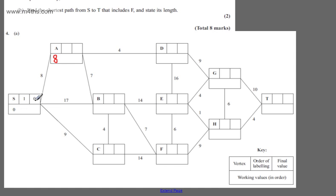We consider the connected vertex and all of the unconnected vertices that we can reach directly from S. We can go directly from S to A, so I put in a working value of 8. We can get from S to B — that would be 17 — and we can get from S to C. We now choose the one of lowest weight: 8, 17, or 9. Clearly it's 8, so this order of labelling becomes 2 and we put a final value of 8 miles. This tells me the shortest route from S to A is definitely 8 miles, directly from S to A.